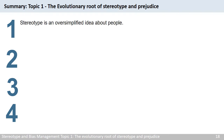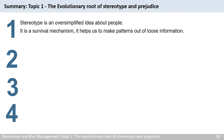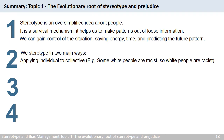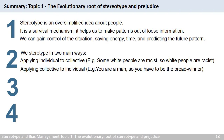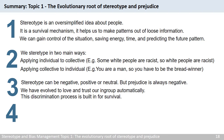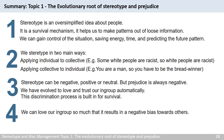Stereotype is an oversimplified idea about people — it is a survival mechanism. It helps us make patterns out of loose information so we can gain control of the situation, saving energy, time, and predicting future patterns. We often stereotype in two ways: one is applying individual to collective level — for example, some white people are racist, so white people are racist. Another way is to apply collective to individual level — for example, most men are the breadwinner, you are a man, so you have to be the breadwinner of the family. While stereotype is an oversimplified pattern and can be negative, positive, or neutral, prejudice is always negative. This is rooted in the way humans have evolved to love and trust our in-group automatically. This discrimination process is built in for survival. The problem is, we can love our in-group so much that it results in a negative bias towards others.